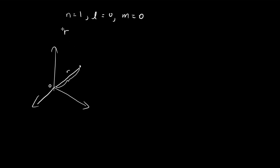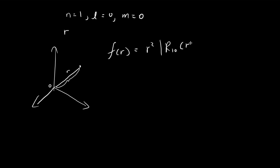In order to do this, we're going to need the probability density function of r. The probability density function of r, I'm going to call it f of r, is actually equal to r squared times the absolute value squared of R₁₀.